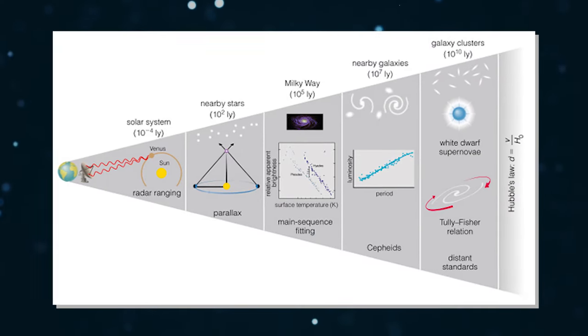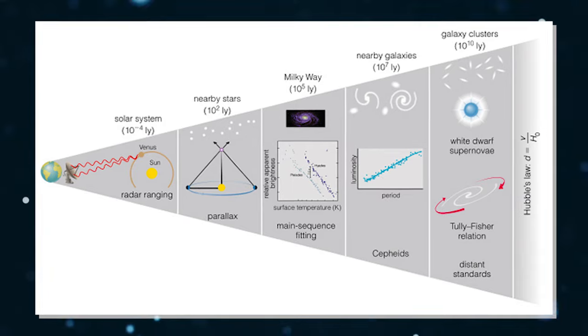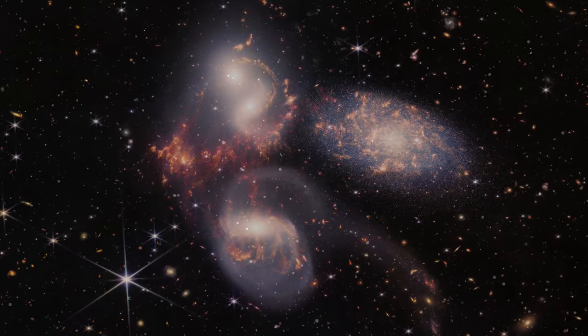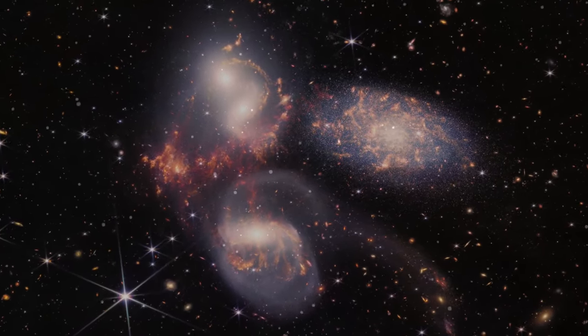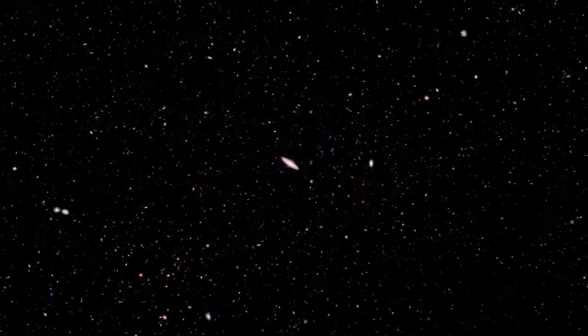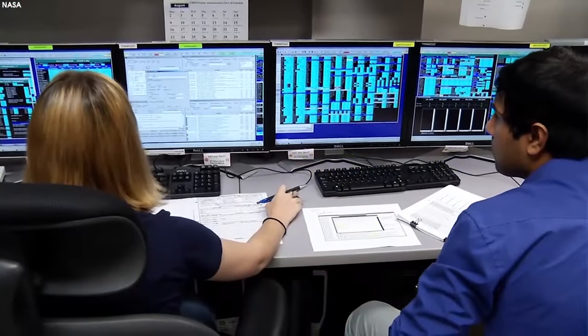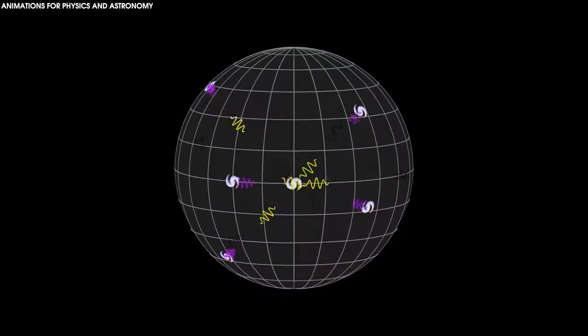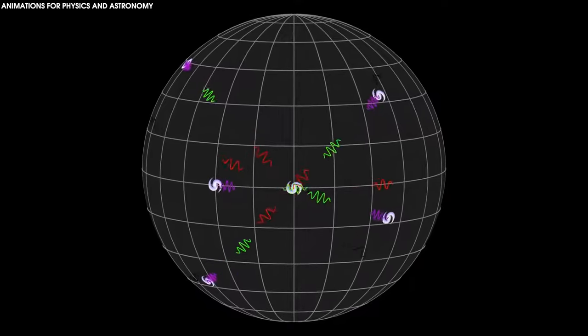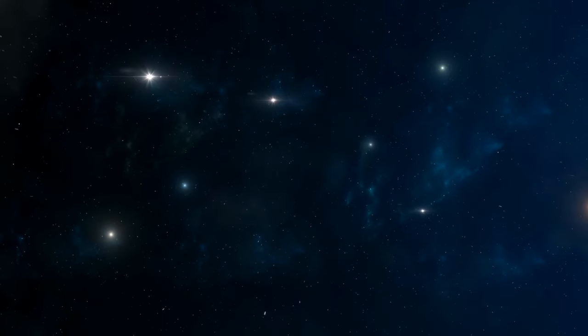Scientists use the cosmic distance ladder to determine the distances of objects in the universe. This method relies on making precise measurements of distances to nearby galaxies and then moving on to galaxies farther and farther away, using their stars as milestone markers. Astronomers use these values along with other measurements of the redshift of galaxies as they pass through an expanding universe to calculate how fast the universe is expanding over time, a value known as the Hubble constant.